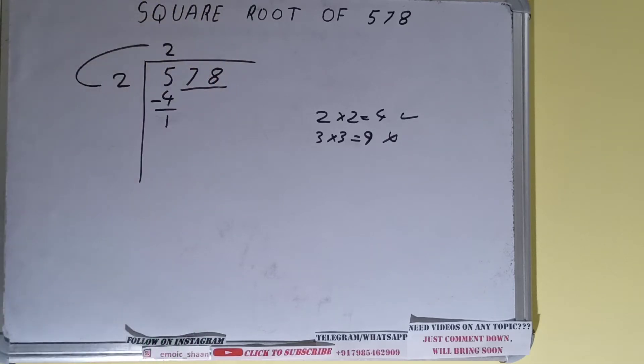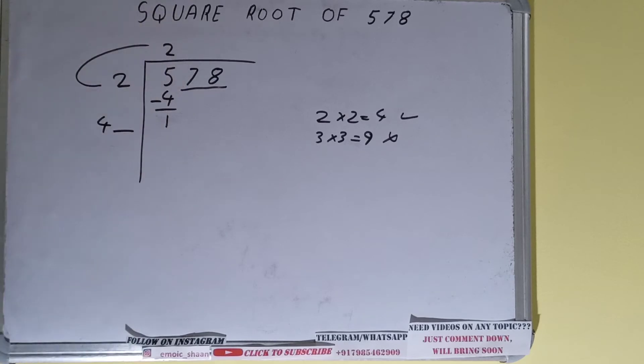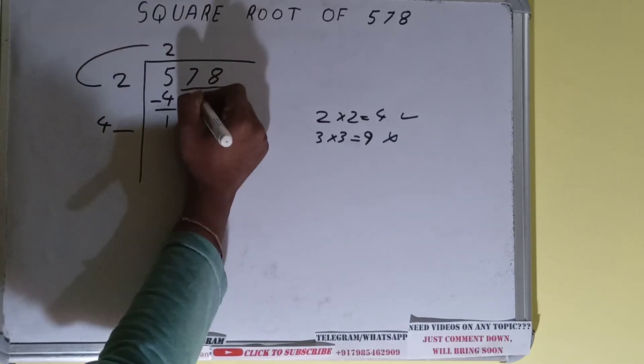Now we did 2 into 2, right? So do 2 plus 2, it will be 4, and keep one digit extra. And this number we need to make it big, so bring the next pair down and it will become as 178.